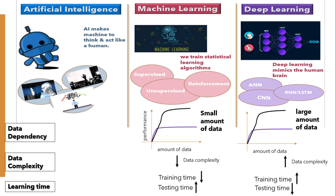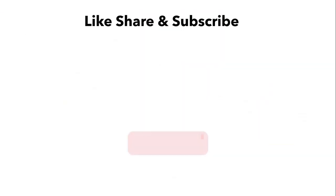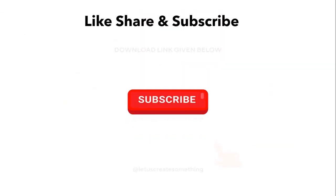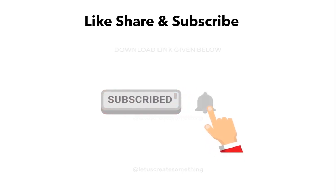I hope you guys understood this video — how artificial intelligence, machine learning, and deep learning are different from each other in terms of working, functionality, and application. Thank you for your time. Do like, share, and subscribe, hit the bell icon to get the latest updates. Happy learning and stay safe.